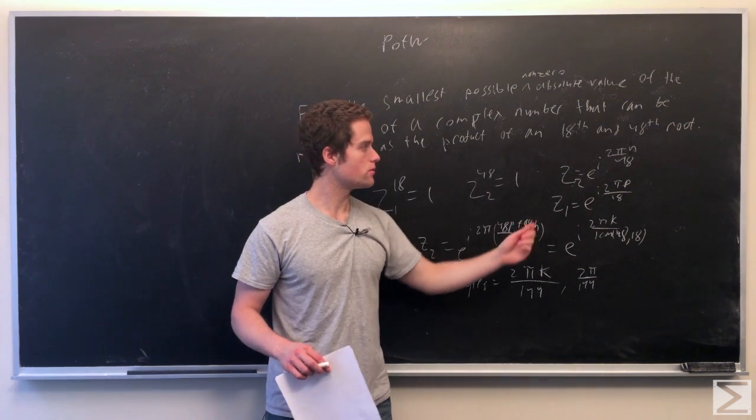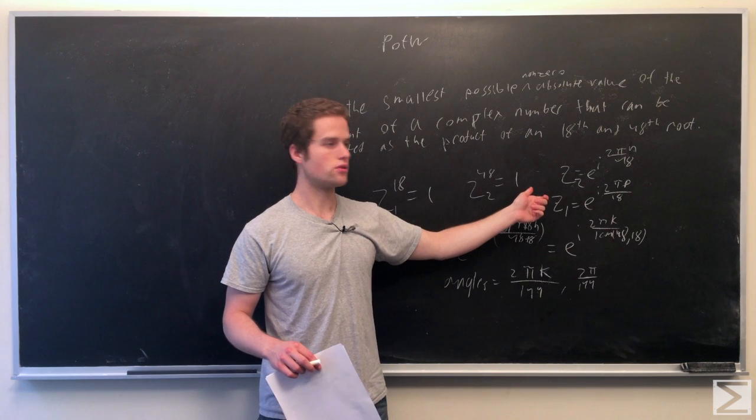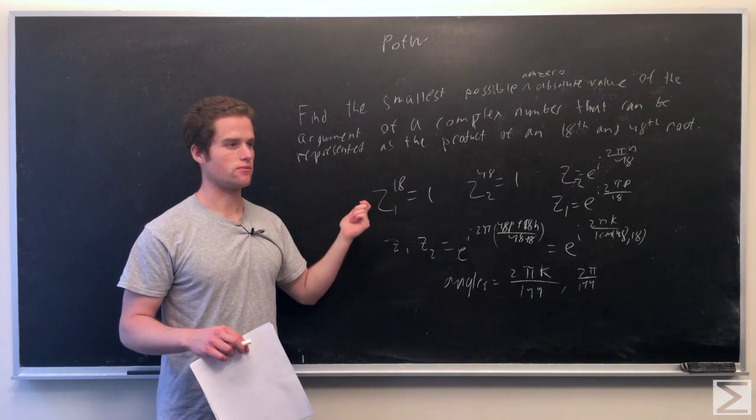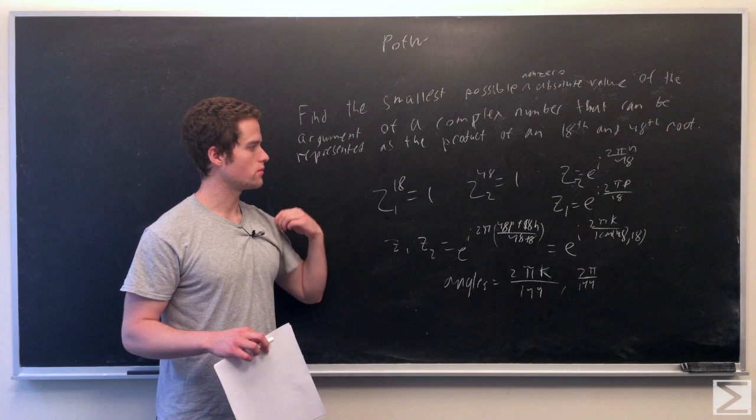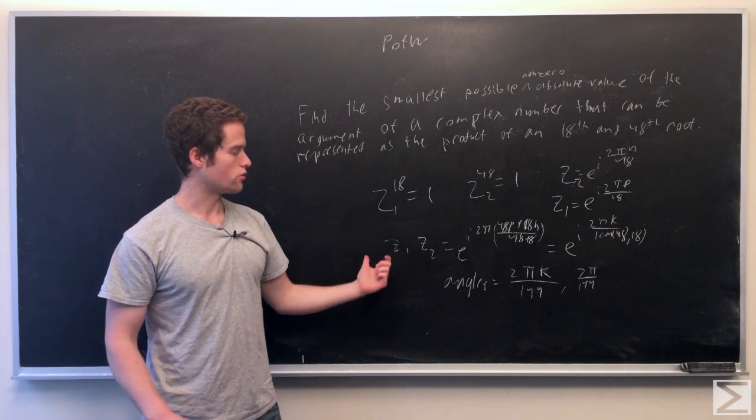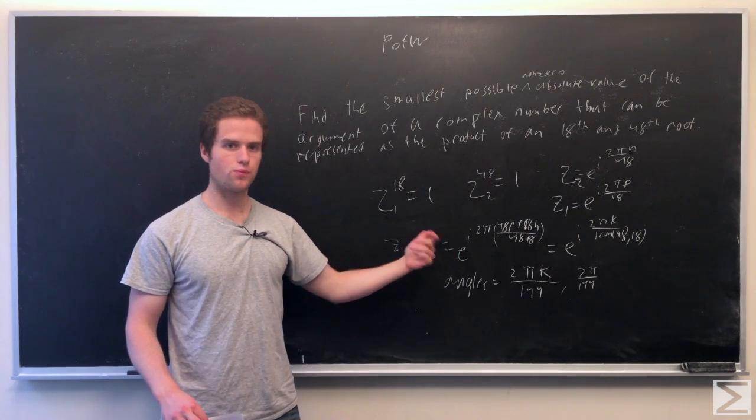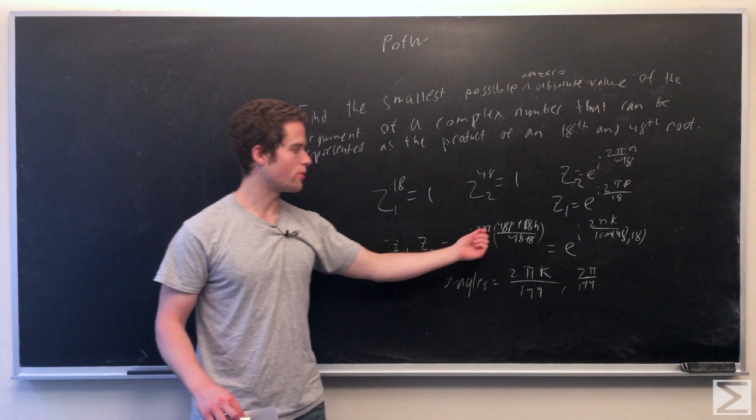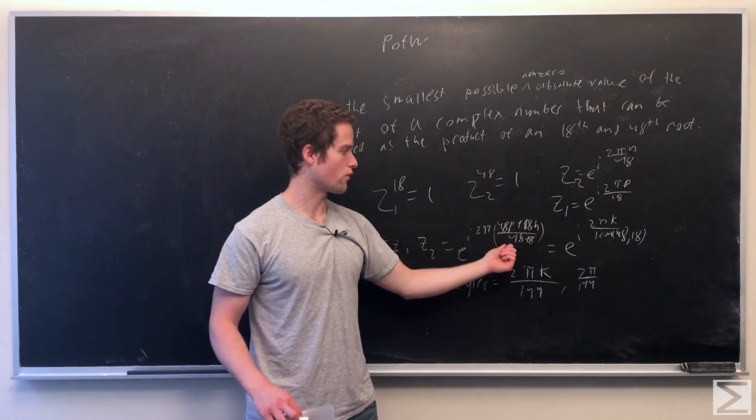Similarly for z2, now if we multiply these two together, we get our complex numbers that can be represented as a product of two of these roots. So together they form something of a form e to the i 2 pi 48p plus 18n over 48 times 18.